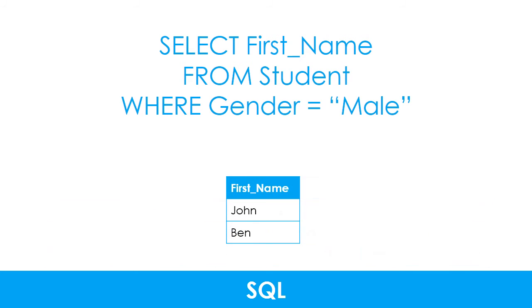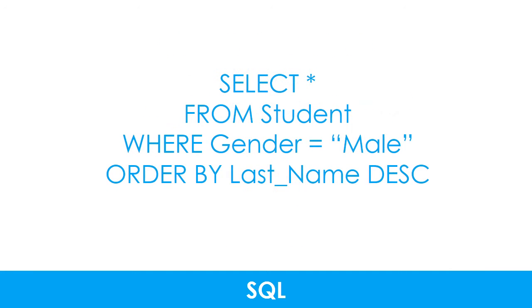Here are the results of this query. If you want to show all fields from the table, you can write SELECT and an asterisk. You can also sort the results using the ORDER BY command. This example will sort the records by last name in descending order.